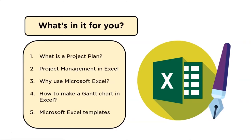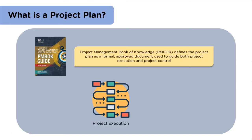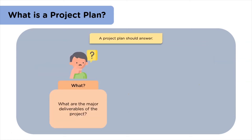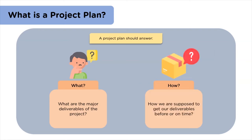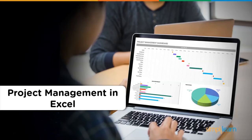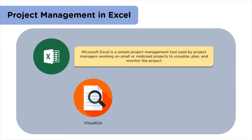In this session we will talk about project planning in Excel. According to the project management Book of Knowledge, a project plan is an approved, elaborative document that guides the team during project execution and control. A project plan must answer: what is the project expected to deliver, how will deliverables be achieved within the desired time, who will be part of the project and what tasks they will have, and when will the project start and end.